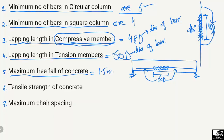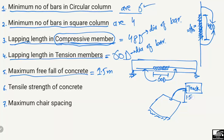The next point is the maximum free fall of concrete, which is equal to 1.5 meters. If concrete is being poured from a concrete mixer truck into a structural member, the maximum allowable height from which it can fall is 1.5 meters. This limit exists due to the segregation problem — concrete must not be allowed to free-fall more than 1.5 meters.